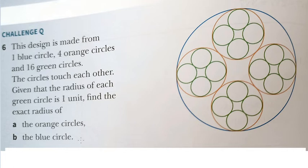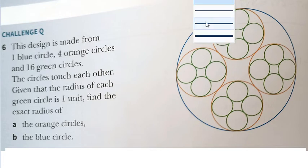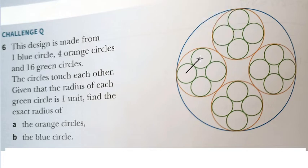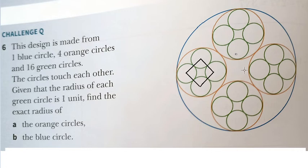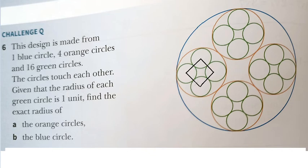Now I will show you how to answer. The first thing: from the center of one green circle, we connect to the center of the next circle, and repeat the process. We know that the radius is one, so the side length is one plus one, which is two. All sides have the same length, which means this forms a square.